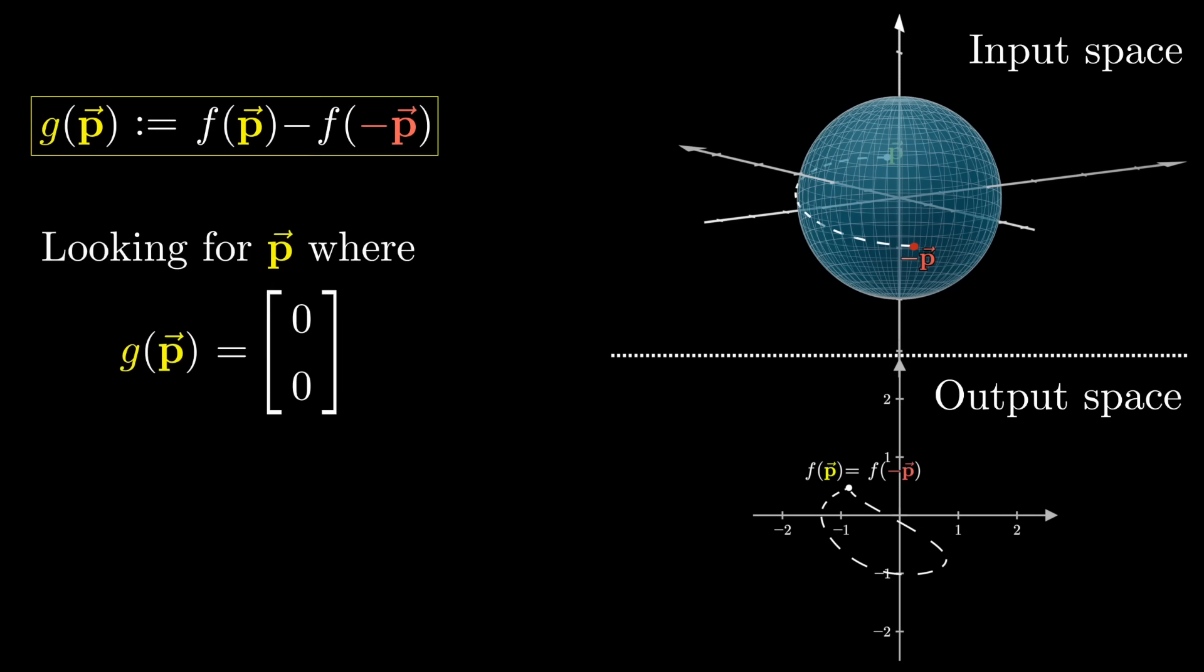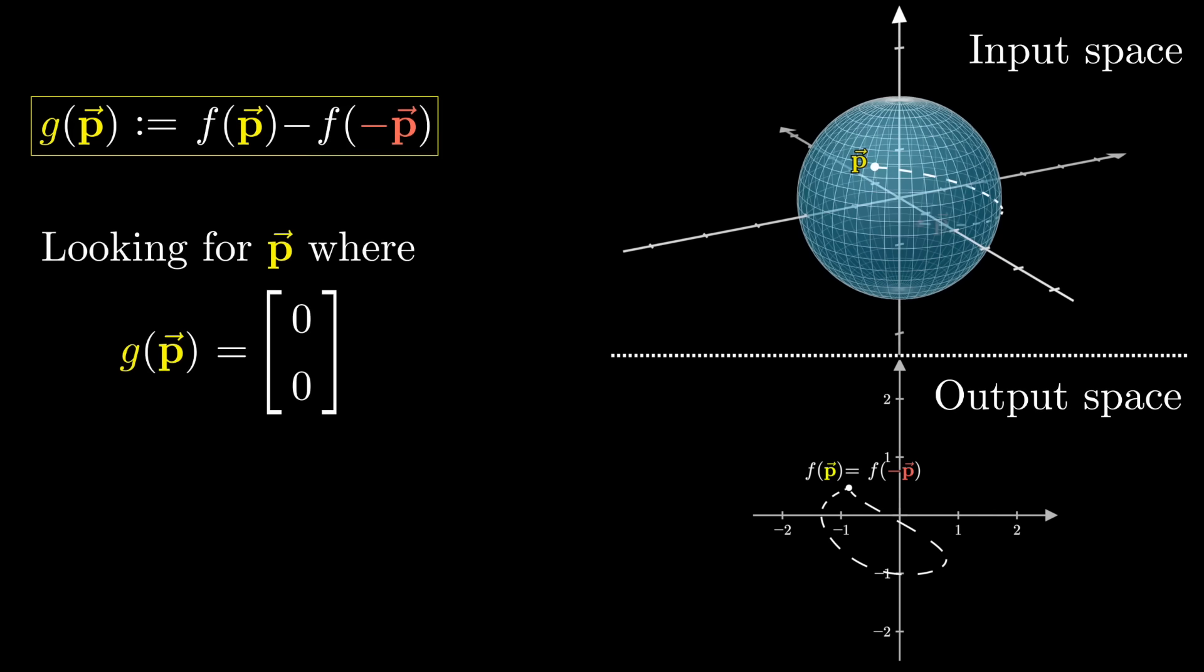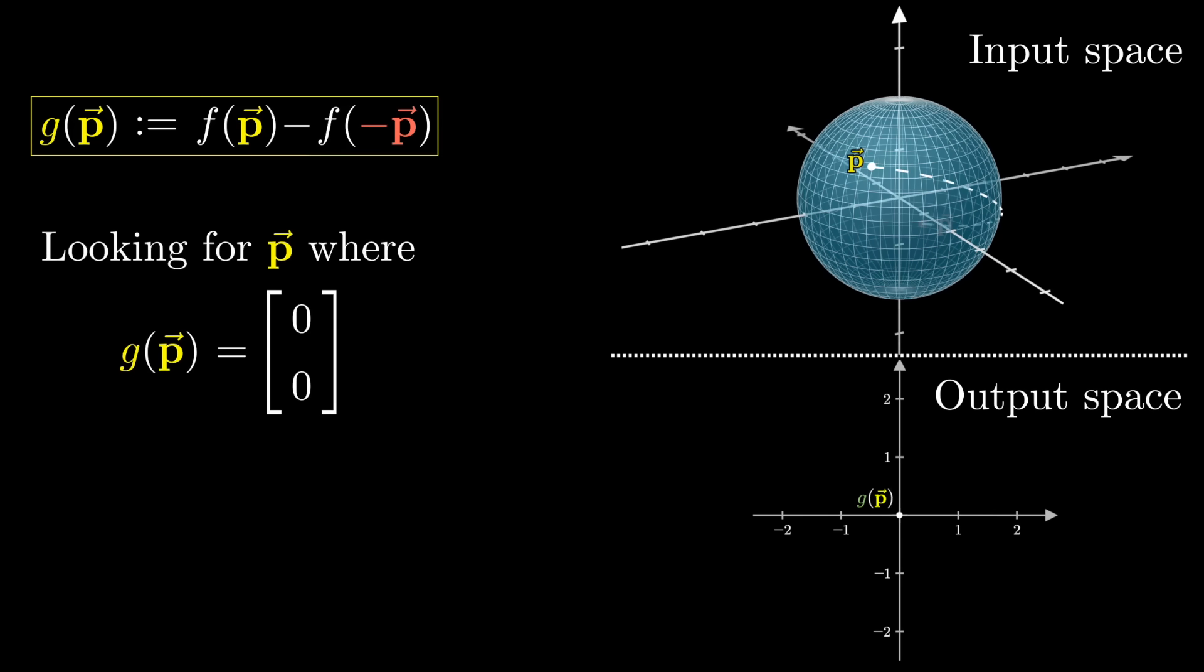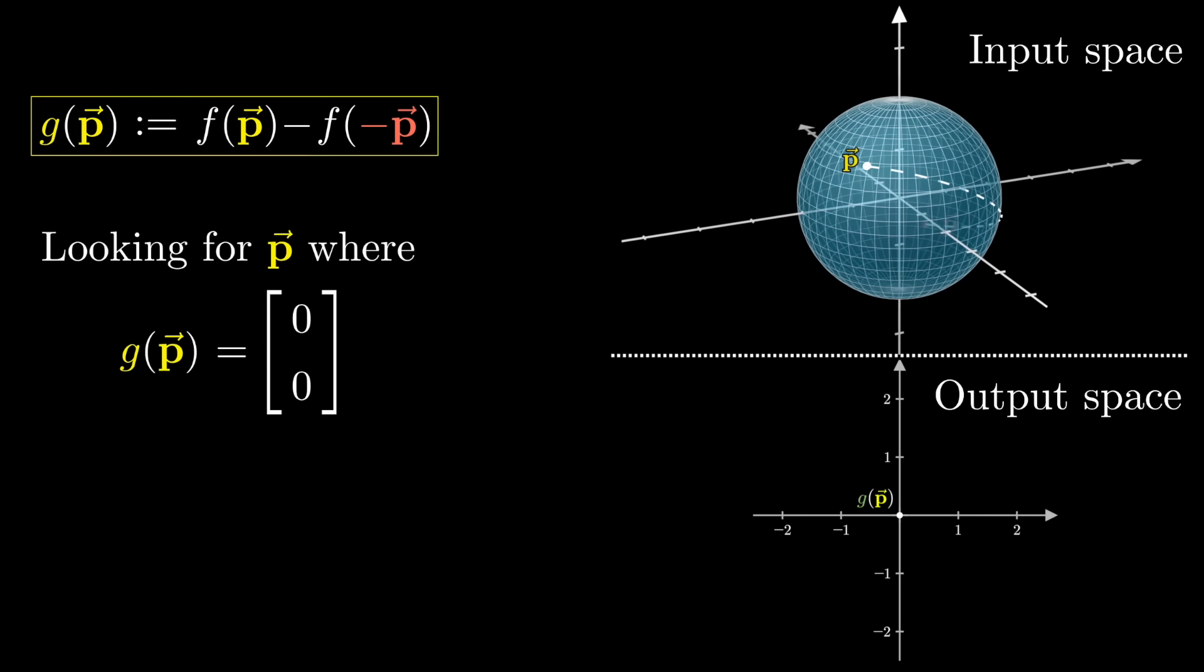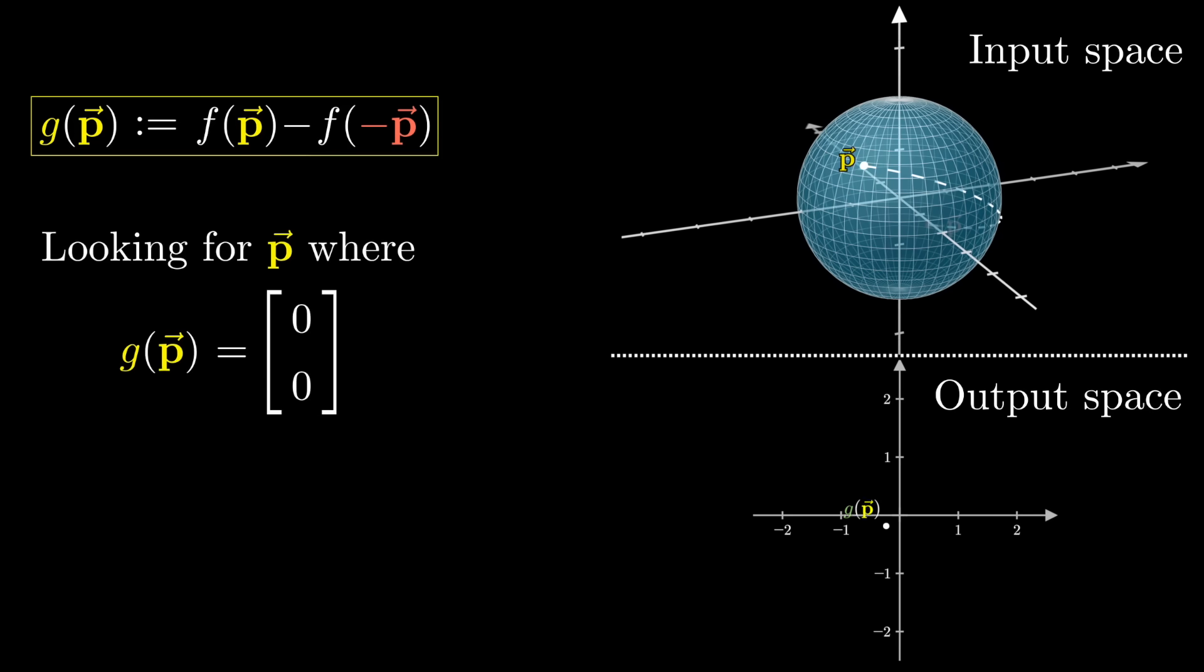This way, what we need to show is that g maps some point of the sphere onto the origin in 2D space. So rather than finding a pair of colliding points which could land anywhere, this helps limit our focus to just one point of the output space, the origin.